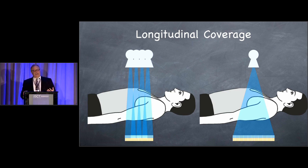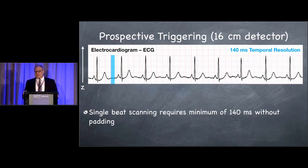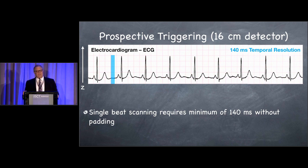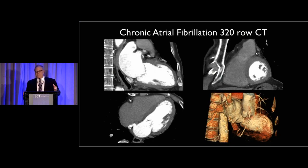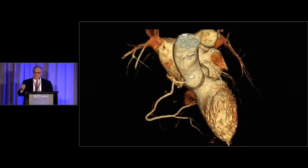The alternative to achieve high longitudinal coverage is to have a wide-area detector. With a wide-area detector, you can acquire your scan in a single beat, and that has a huge benefit because the scan duration in a 140 millisecond temporal resolution example is just 140 milliseconds. Here's a patient with chronic atrial fibrillation scanned on a 320-row scanner — even though there is an irregularly irregular heart rate, you see excellent clarity. You can also use these scanners to acquire a CINE acquisition of just one heartbeat playing over and over.